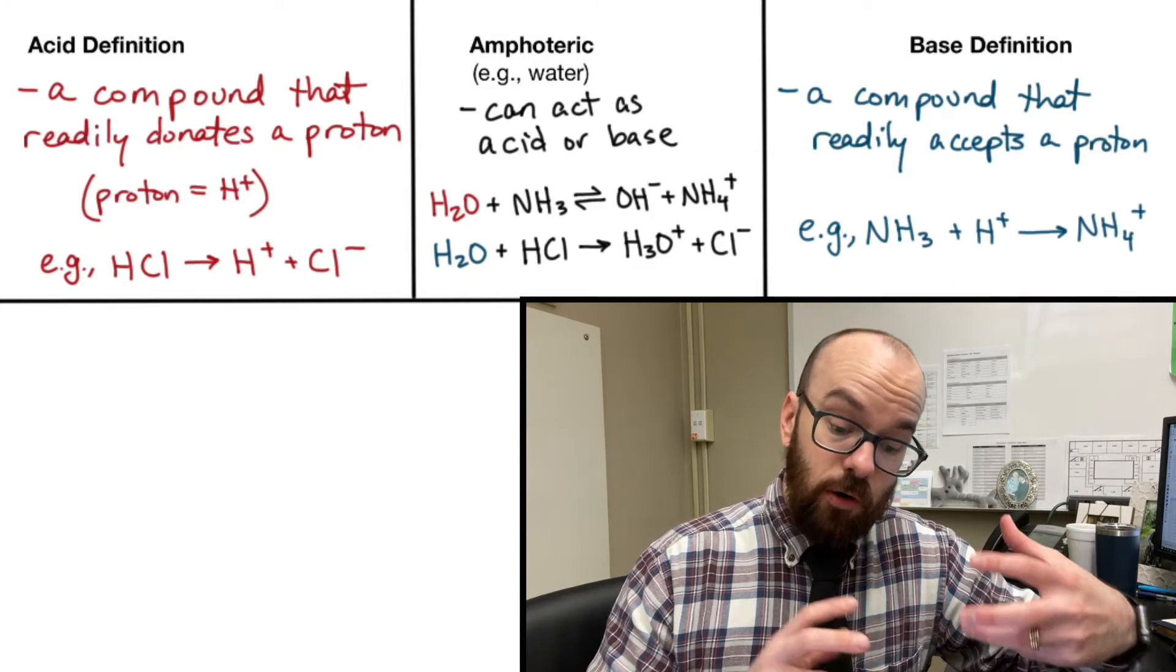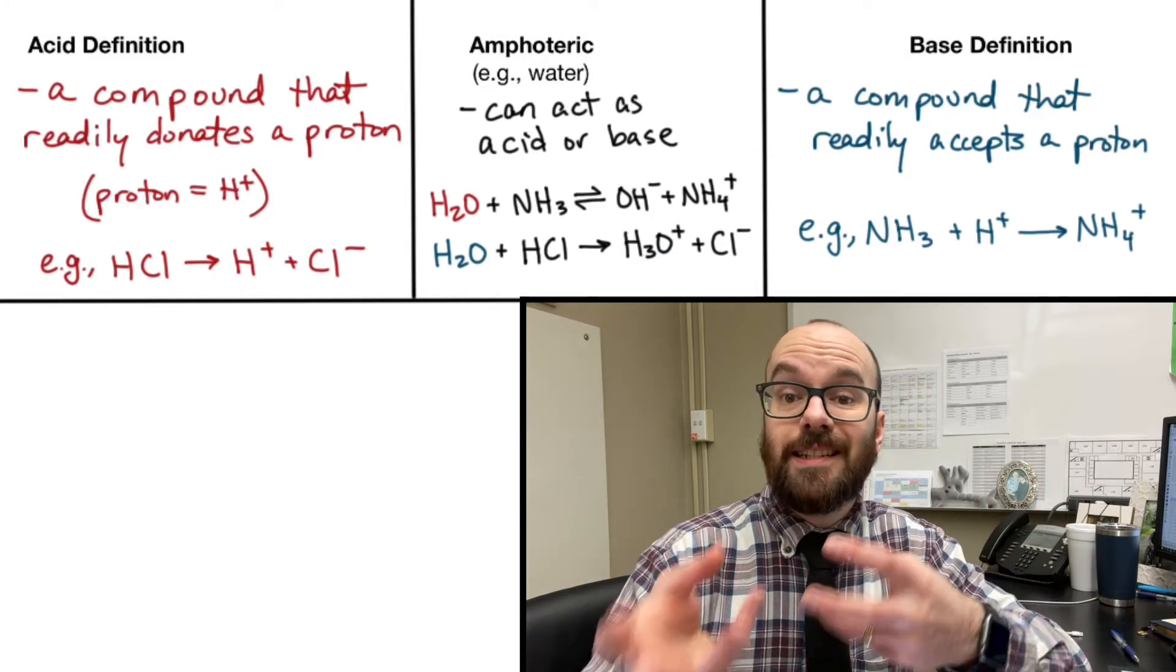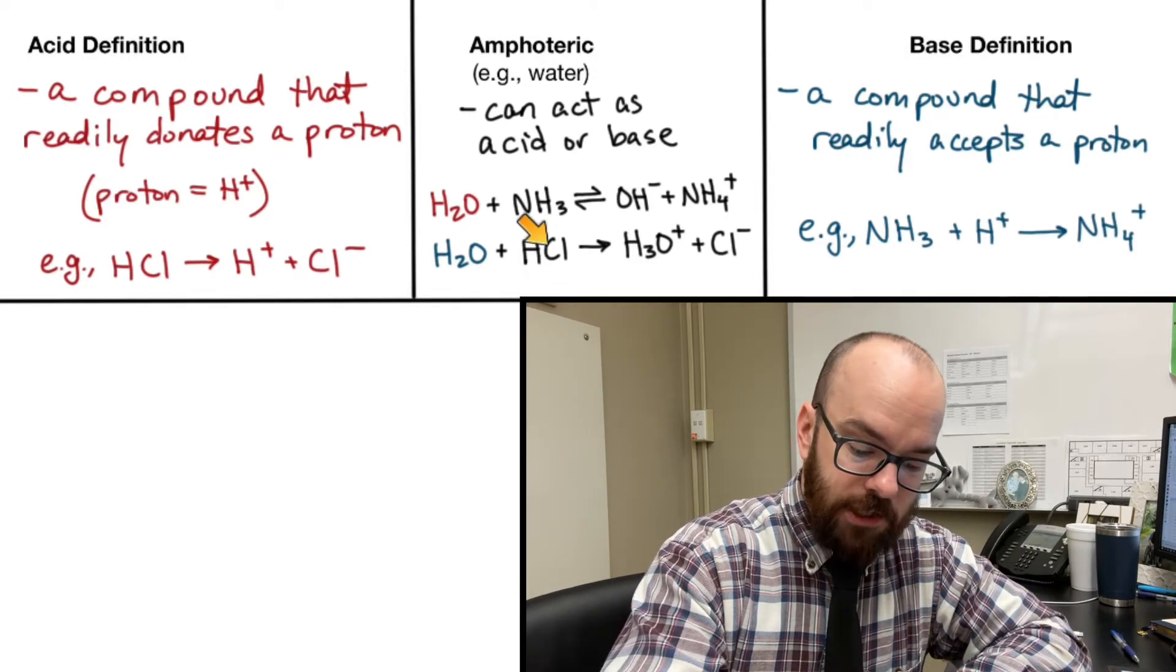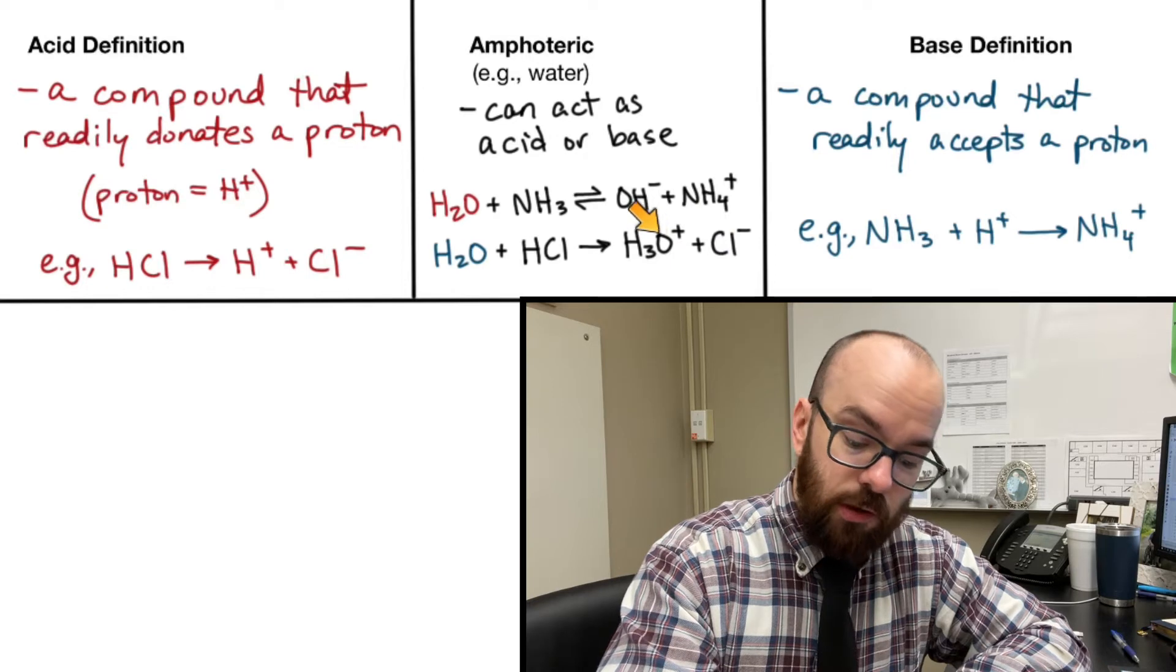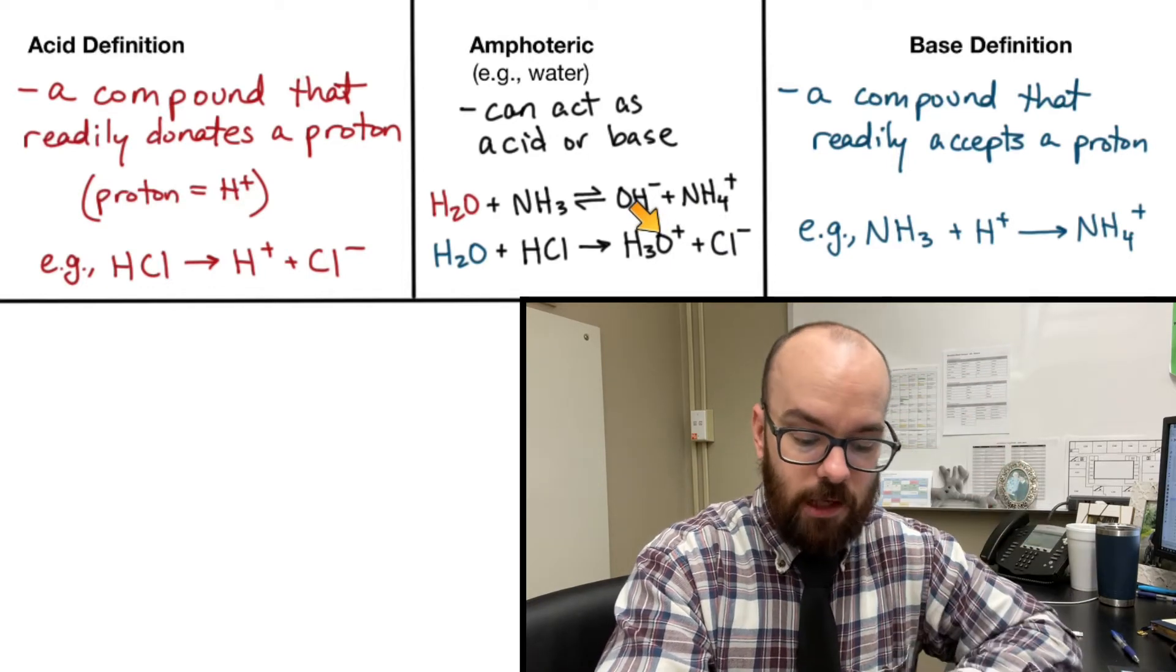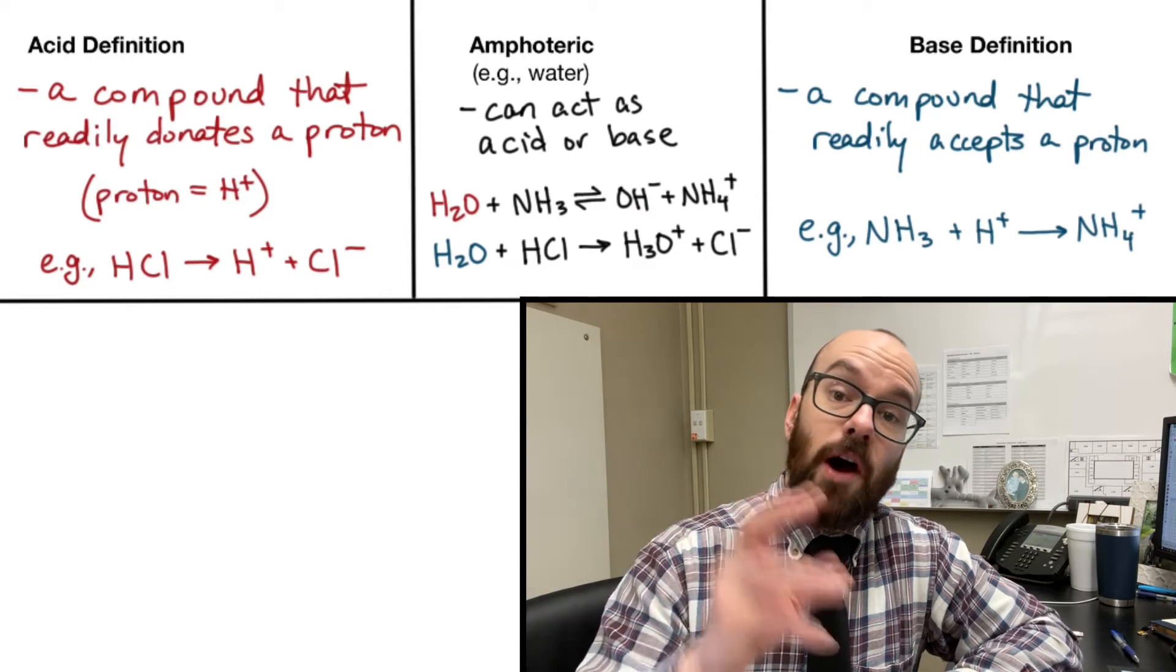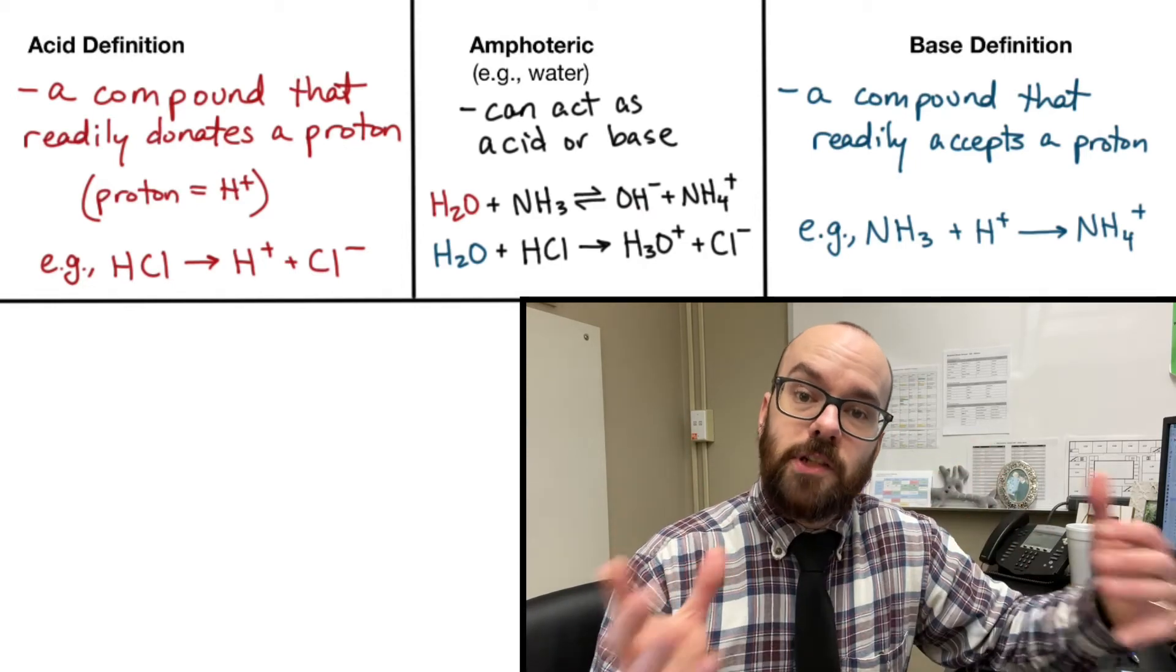On the other hand, if H2O is with HCl, then H2O can act as a base. It's going to take a hydrogen from HCl, and so the HCl is just left with Cl-, but the H2O has now become H3O+ because it's taken an H+ from the HCl. So those are examples that show water being an acid or water being a base. It can be either, so we call it amphoteric.